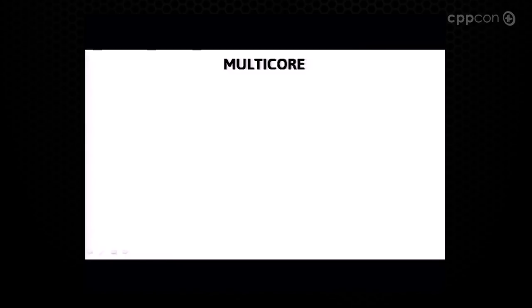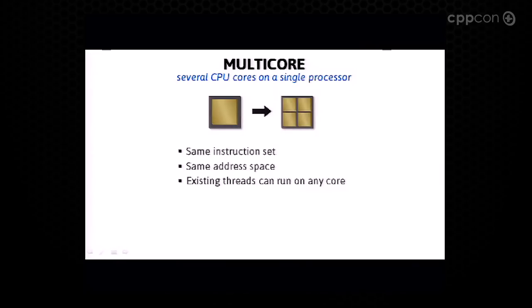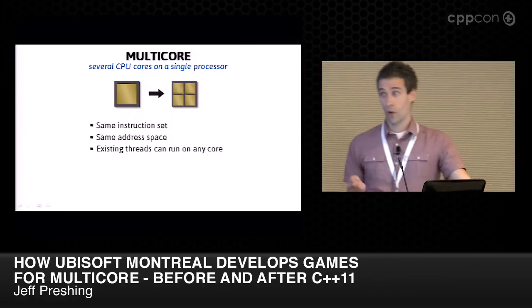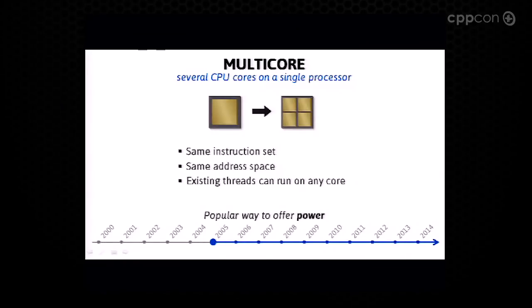Multi-core is when you have several CPU cores on a single processor. Each core understands the same instruction set, runs in the same address space, and you simply migrate existing threads from one core to the other. This is the kind of multi-core I'm going to be talking about — no GPUs, no SPUs — which became mainstream around 2005 when it became the new popular way for CPU vendors to offer more power to programmers like us.